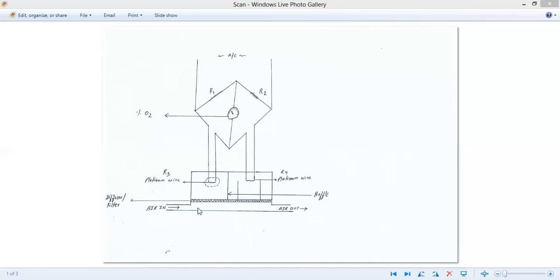So air is drawn in, oxygen is attracted here towards R3, and at R4 there is only air. Both gases have different thermal conductivity, due to which there will be a current flow shown on the galvanometer as percentage of oxygen. This is the working principle of an oxygen meter or oxygen analyzer.